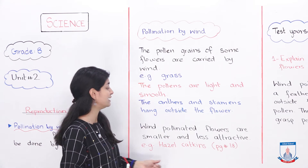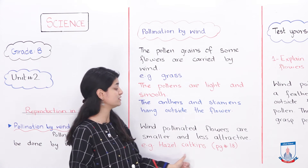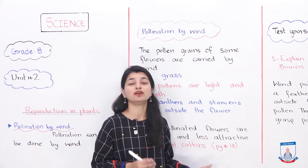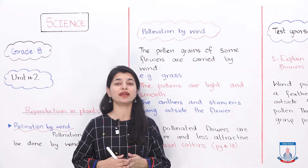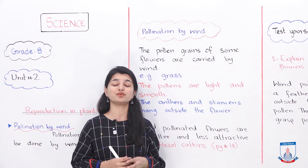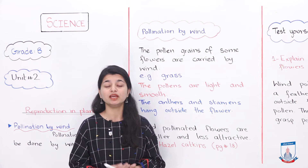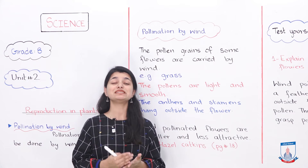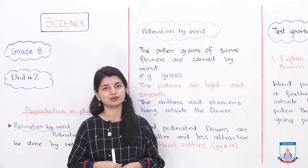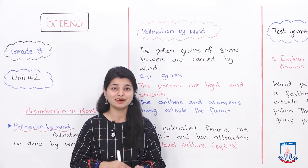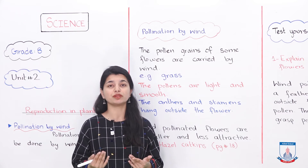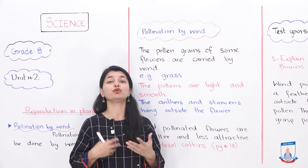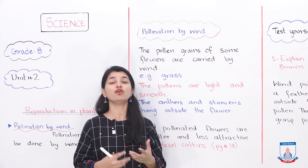Wind pollinated flowers are smaller and less attractive. As you can see the hazel catkins on page number 18 in your book — that looks like a nice yellow plant. But what they are saying is that usually wind pollinated flowers or plants are not so beautiful and attractive. Why? Because they do not need to attract insects. Plants that rely on insects for pollination are very beautiful with colorful petals, but those that rely on wind are not so good-looking.